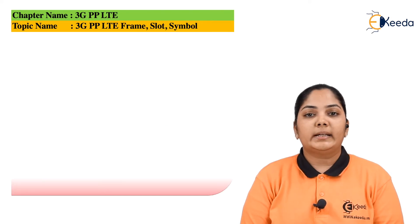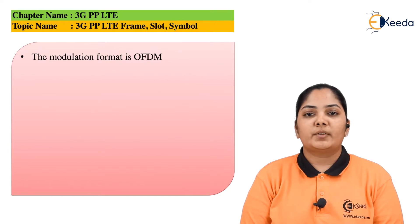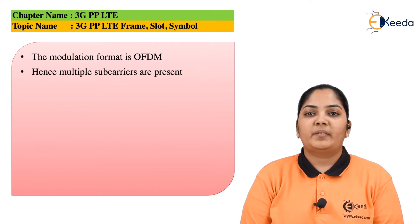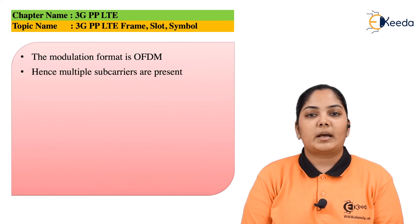Let us now move to the details of the symbol. The modulation format used here is OFDM, which stands for Orthogonal Frequency Division Multiplexing. In this technique, there are multiple frequencies which have been used, and all the frequencies are orthogonal to each other or 90 degrees apart from each other. Hence, in OFDM, multiple subcarriers are present.